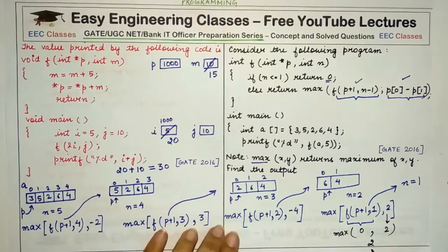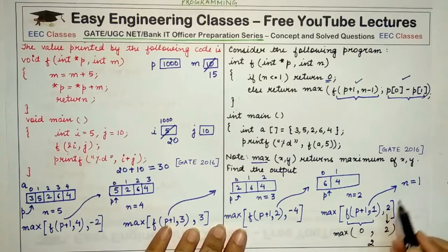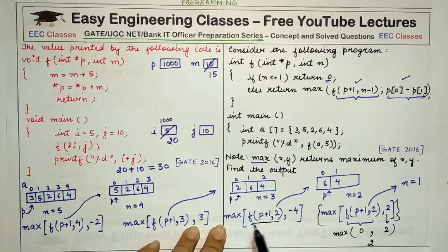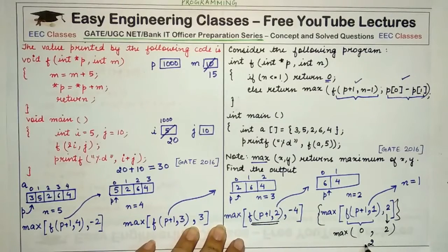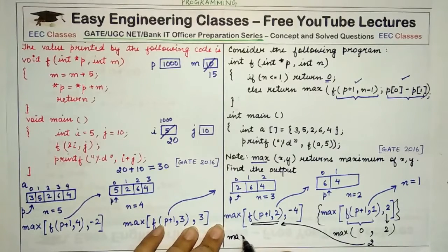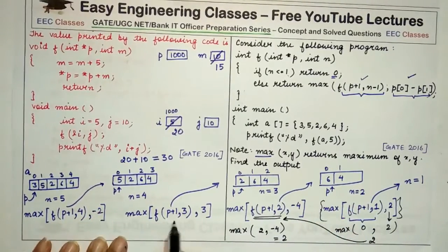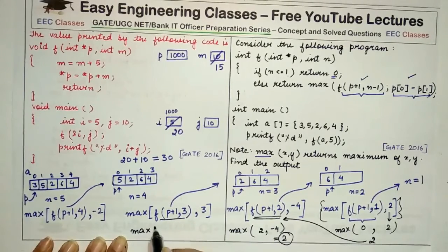The value 2 is returned to the previous call. In that call, the comparison is max(2, -4), and the answer is 2 again. This 2 is returned back further, and the comparison becomes max(2, 3). The maximum of 2 and 3 is 3.